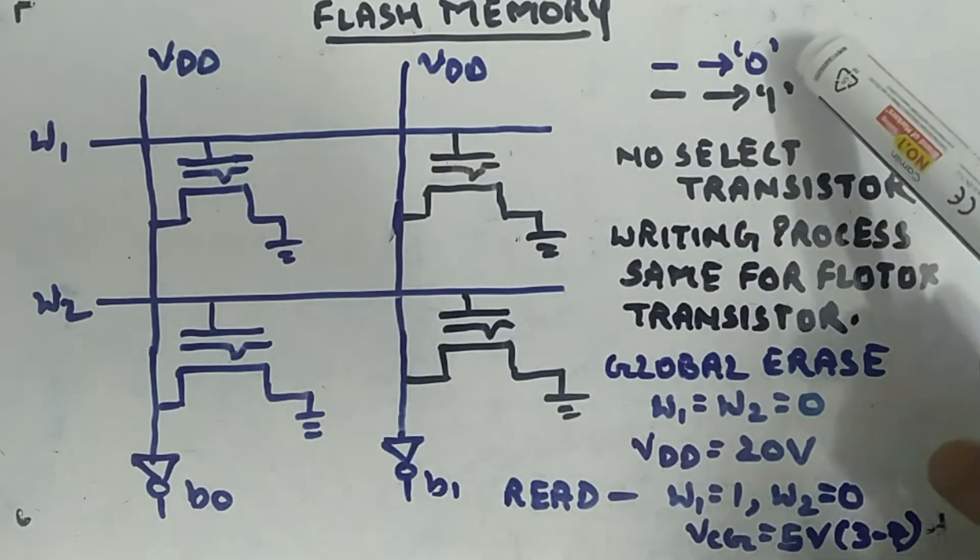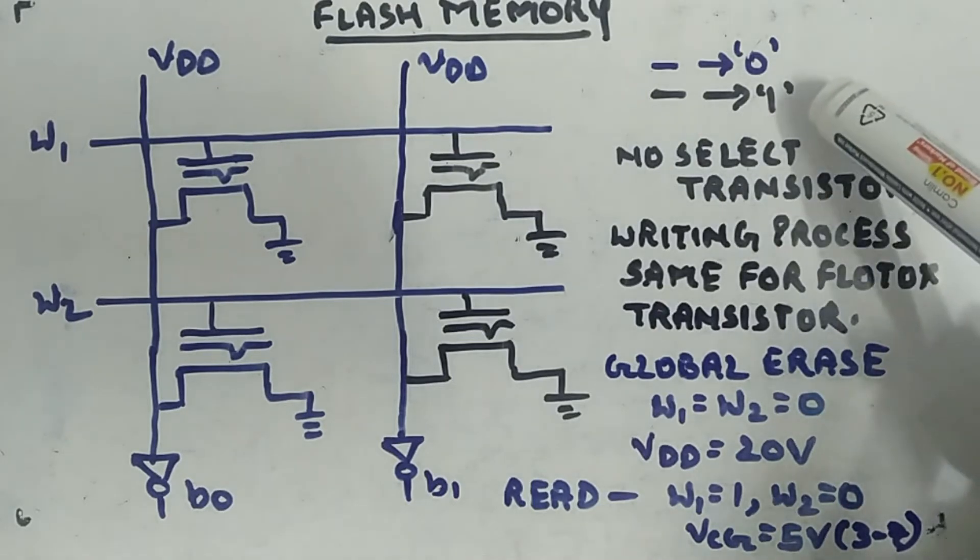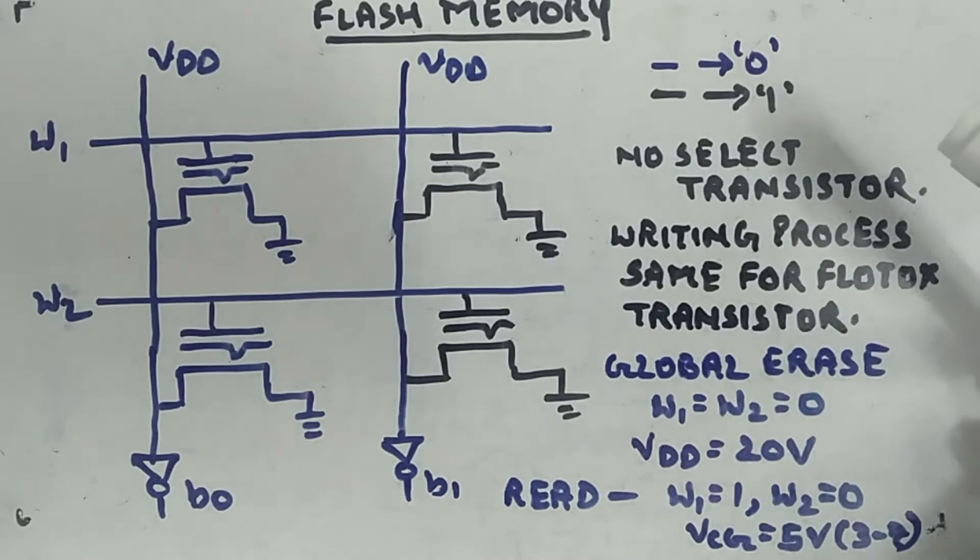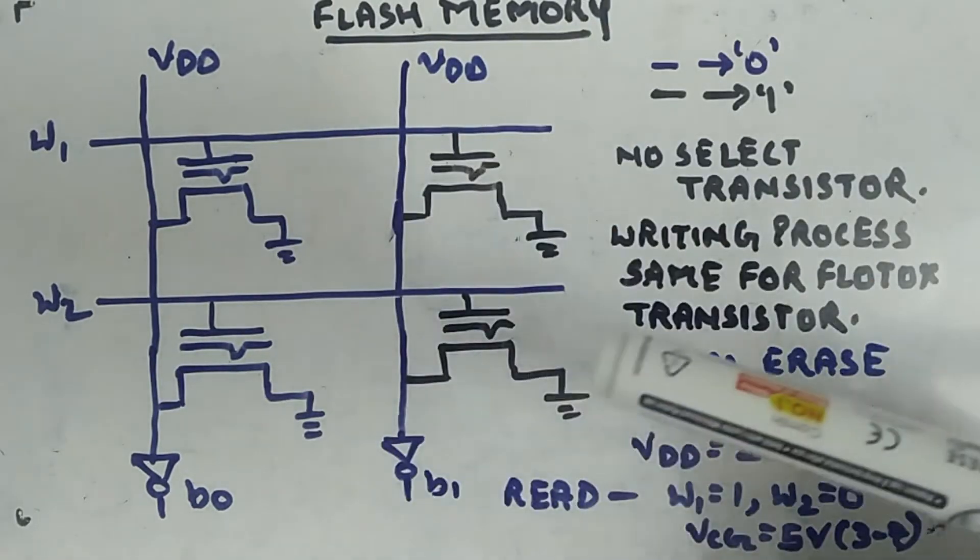To make it logic zero, you apply high drain-source voltage and low gate voltage to program it as logic one. You have already seen this. This is how the arrangement works.